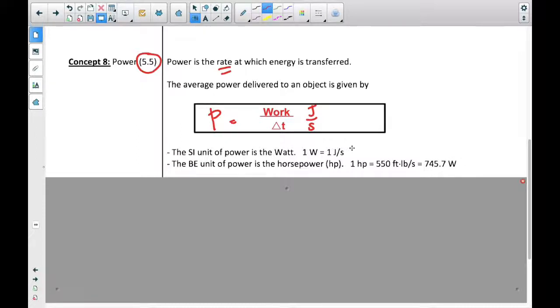Usually you can tell from context whether you're talking about work or watts. The British unit of power is the horsepower. And so a lot of times in the U.S. we hear the phrase horsepower, but the SI unit is the watt. And a horsepower is 550 feet pounds per second or 745.7 watts.